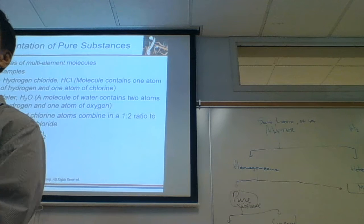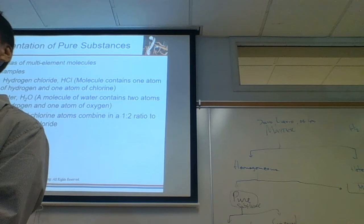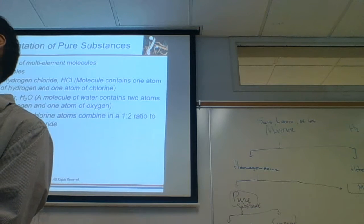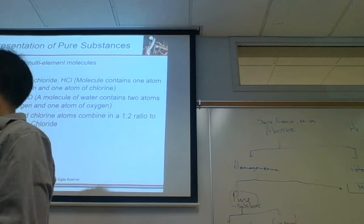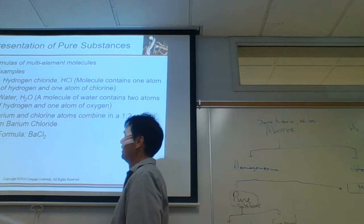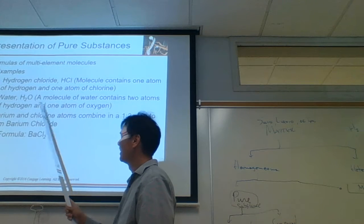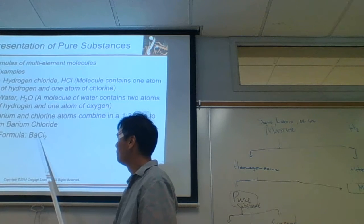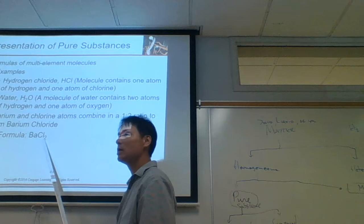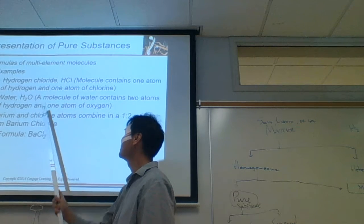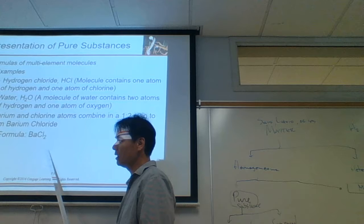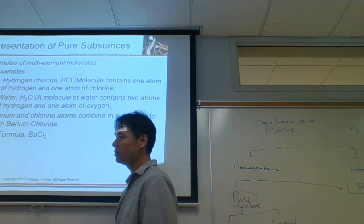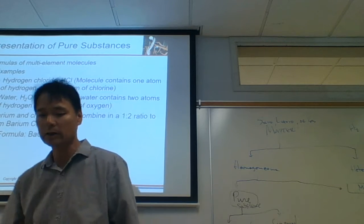BaCl2 is called barium chloride, not barium dichloride. So why do we use 'di' sometimes and not others? We have to look for the patterns. Ammonia is a common name — by nomenclature it would be nitrogen trihydride. We'll learn these naming patterns soon.